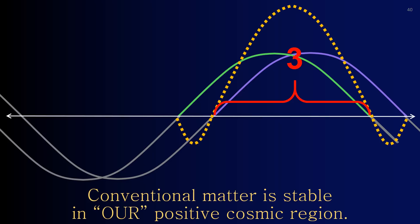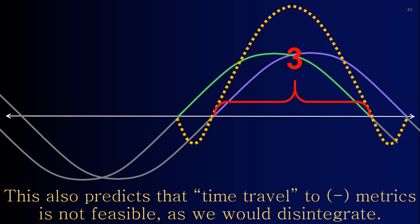Conventional matter is stable in our positive cosmic region. This also predicts that time travel to negative metrics is not feasible, as we would disintegrate.